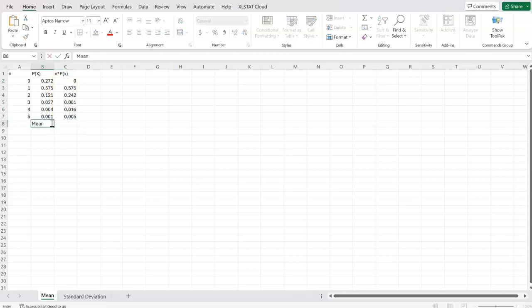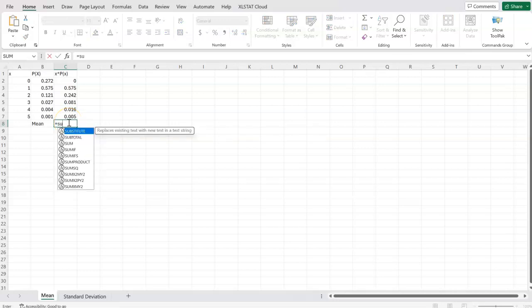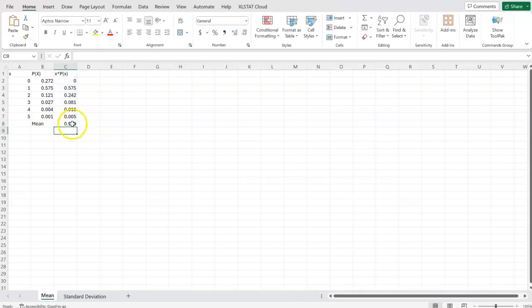And so the mean is going to be equal to the sum of these values, the x times the probability of x. So I'm going to equal that to the sum, open parentheses, and I'm going to highlight all of these columns, close parentheses, and hit enter. And that gives me the sum. And so that is my mean. My mean is approximately 0.919, or if I round it to one decimal place, 0.9. Your homework will tell you how many decimal places to round it to. But it's approximately 0.9. That is the mean.